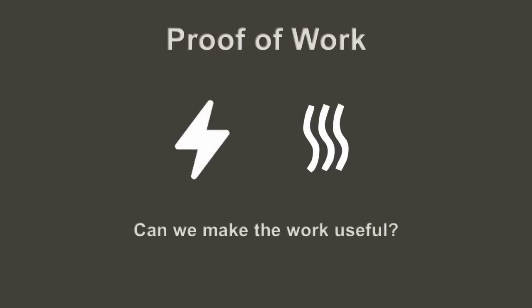Proof of work has been criticized for consuming massive amounts of electricity and producing mostly just heat. This is because most of the work done is discarded when a new block is found — it has no use. There have been several solutions proposed to make this work useful. One of the more notable examples is PrimeCoin, which changed the proof-of-work rules so that the problem being solved was searching for new prime numbers. PrimeCoin is a great proof-of-concept, but the downside is that it has a very limited application.